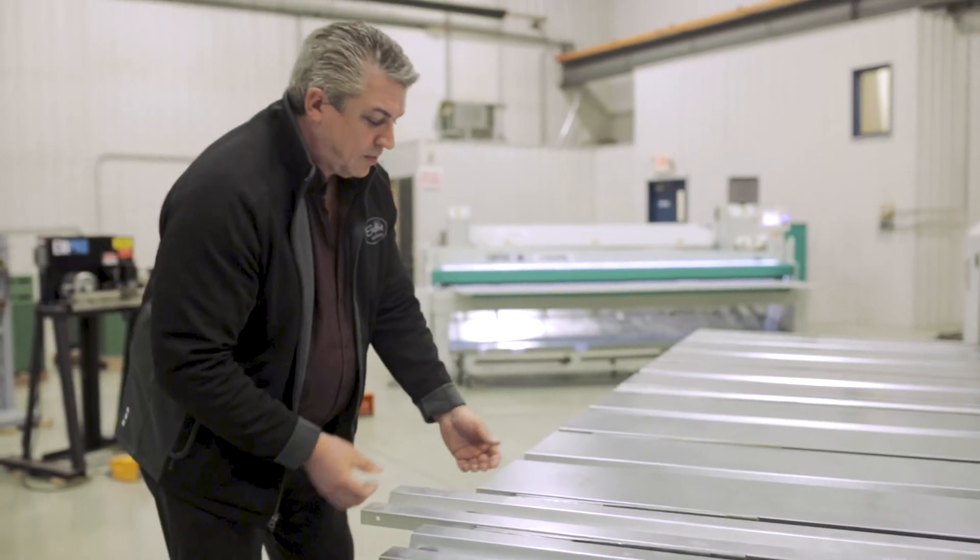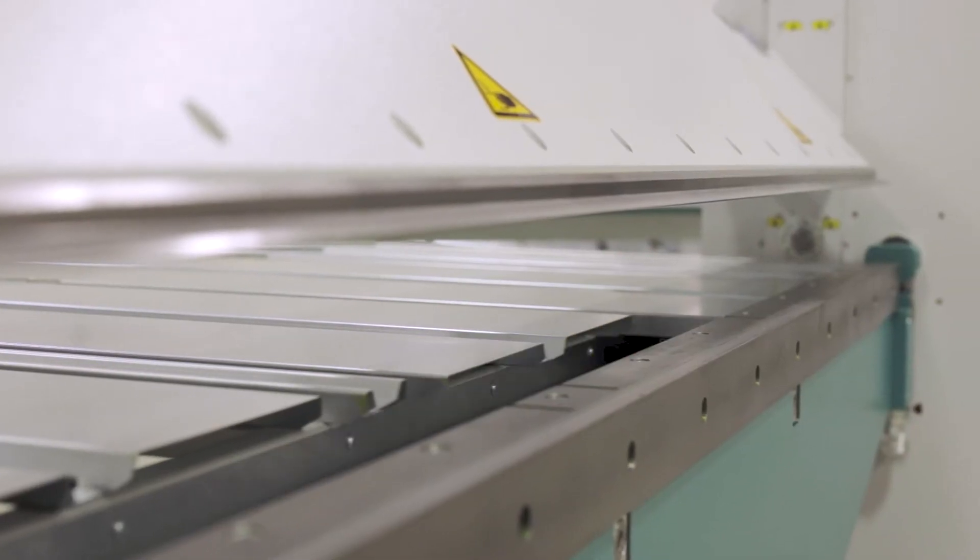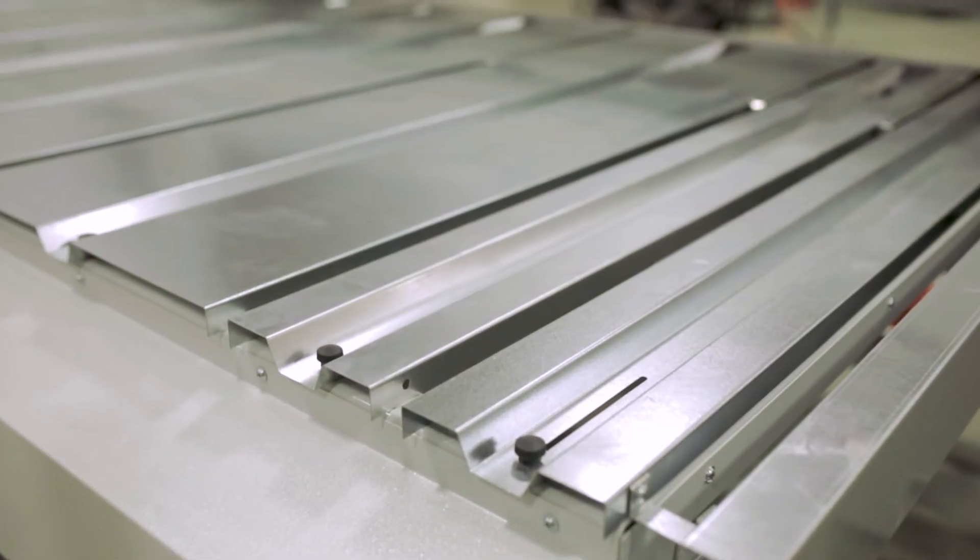The 39 inch servo driven ball screw back gauge comes standard with sliding support panels to allow for those down flange bends. An optional 59 inch back gauge is available as a special order.